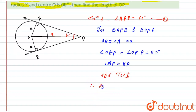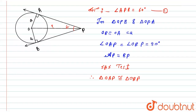From these three conclusions, by the Side-Angle-Side (SAS) test, it is proved that triangle OAP is congruent to triangle OBP. Since the two triangles are congruent, their corresponding parts are equal, so angle OPA = angle OPB.